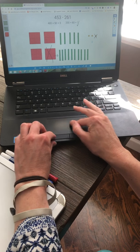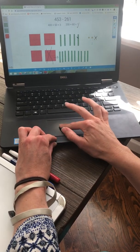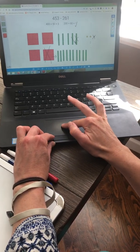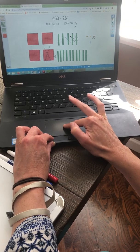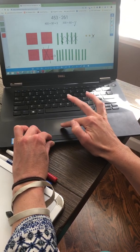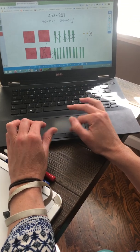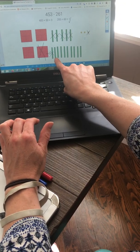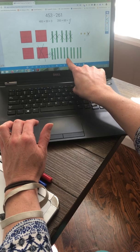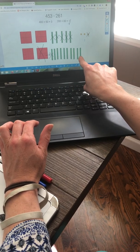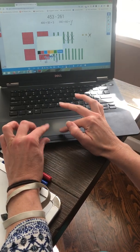I am going to subtract 60, 10, 20, 30, 40, 50, 60. Let's see what I'm left with. 10, 20, 30, 40, 50, 60, 70, 80, 90. I am left with 90.